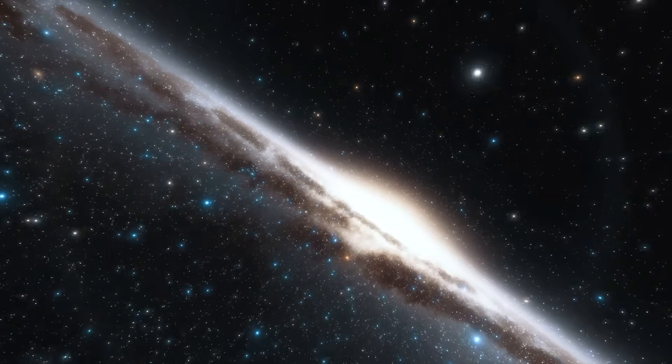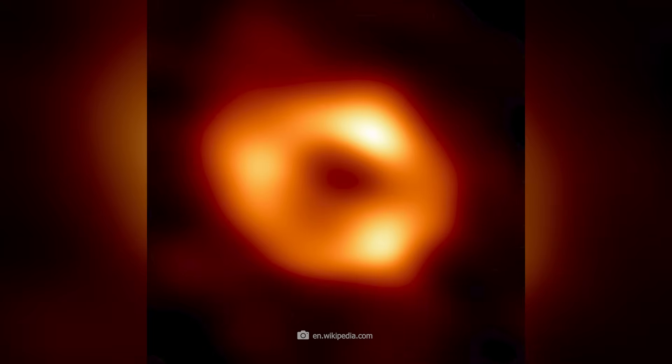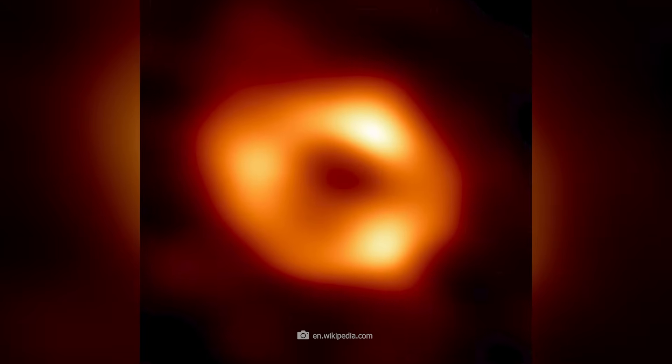It has been known for a long time that at the center of most galaxies is a supermassive black hole. At the center of our galaxy is the black hole Sagittarius A star, which is rather tiny at around 4 million solar masses.